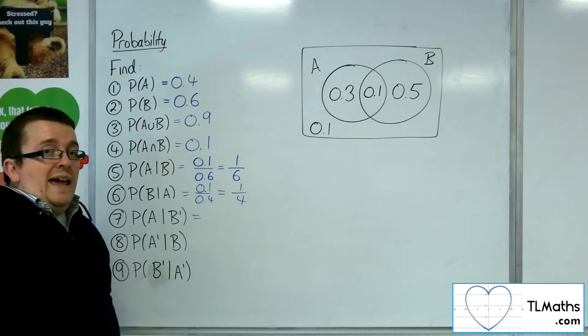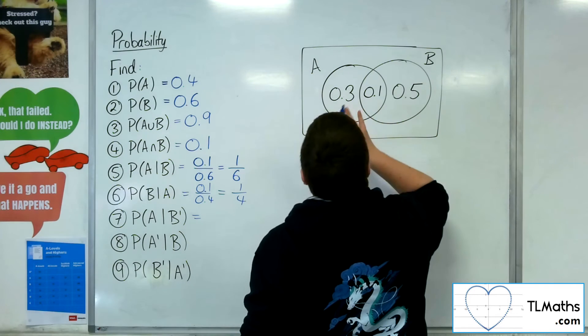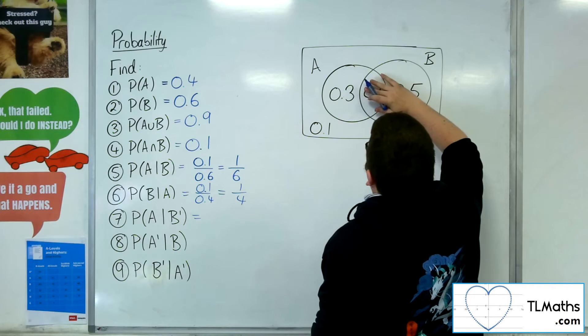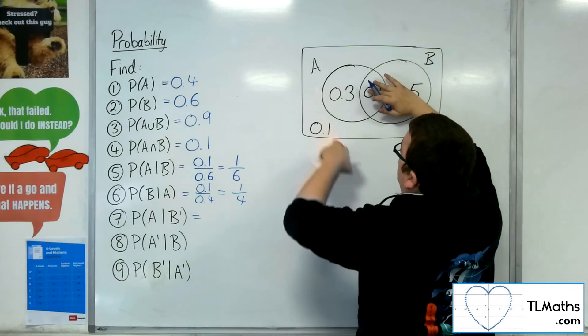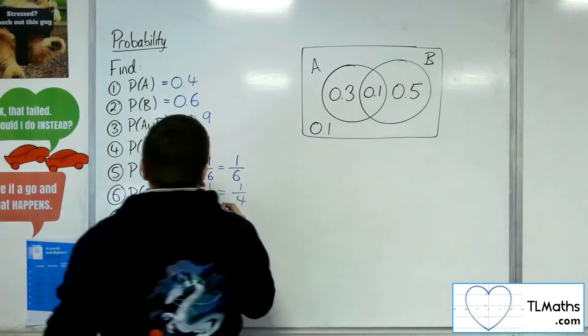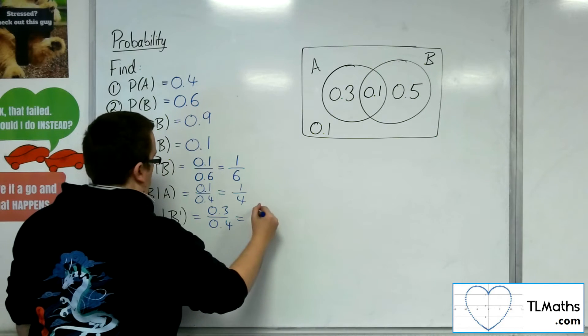The probability of A given not B. So given that we're outside of B, what's the probability of A? Well, it's 0.3 out of the total that you see, so that's 0.3 over 0.4, which is three quarters.